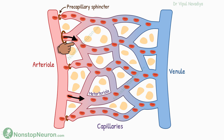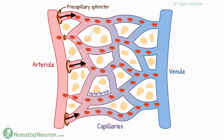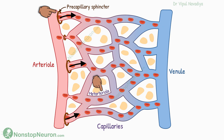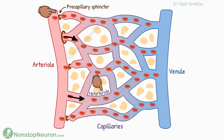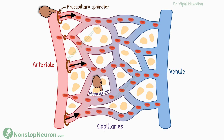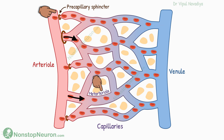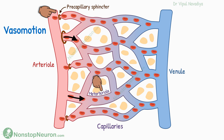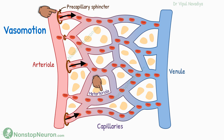That means, at any moment, blood is flowing through some capillaries but not the others. And the capillaries from which blood flows keep changing. This is because the precapillary sphincters and metarterioles keep contracting and relaxing in a cyclic fashion. This intermittent contraction and relaxation of the precapillary sphincter and metarteriole is called vasomotion.